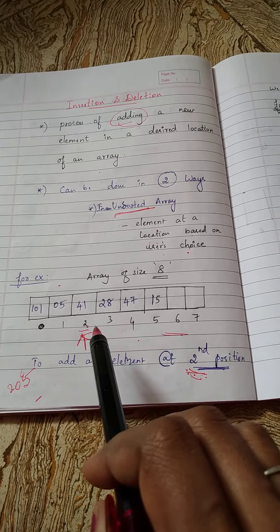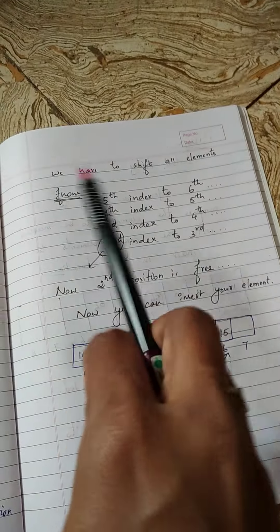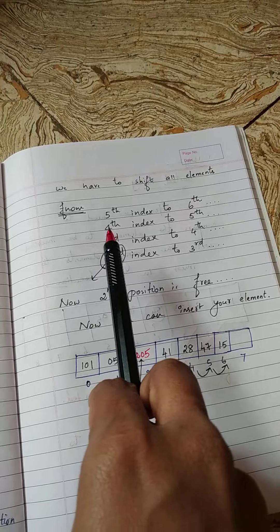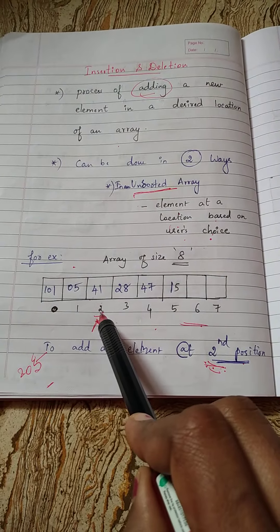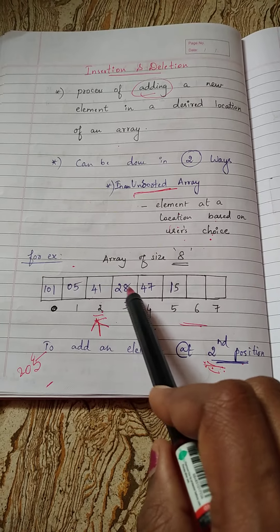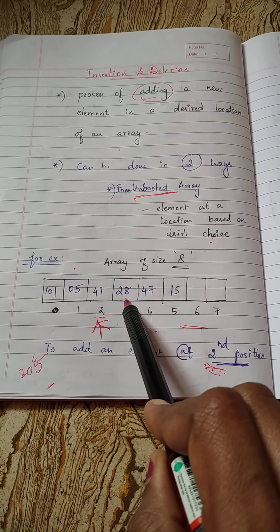Now this is what I want to do by simple shifting. So how will you shift? Where do you have to start your shifting? Now look at the portion: can you shift from second position? No. If you shift second position to third position, the third position element will get erased.